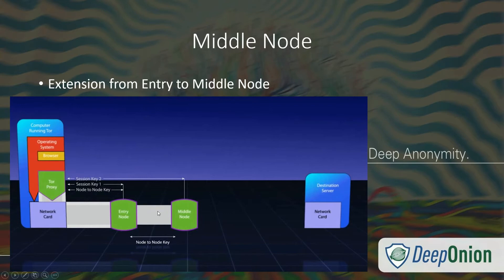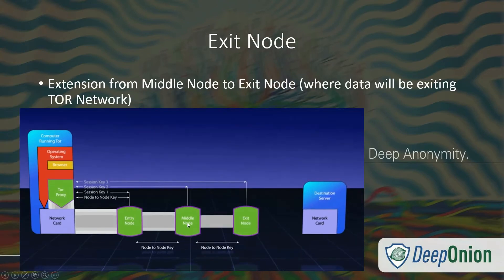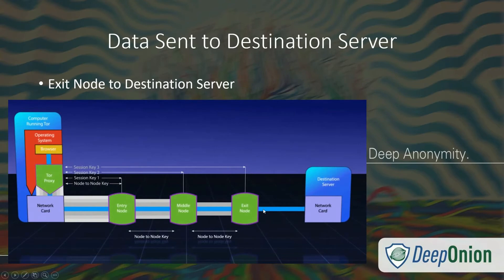The entry node then extends the network to a middle node, creating another secure connection using a new encryption key - key two - between the middle node and your computer. We'll call that session two. All data traveling between the middle node and your computer is encrypted using key two. The network continues to extend where the middle node finds an exit node, which is where your data exits the Tor secure network, generating key three and session three between your computer and the exit node. All data transporting between them is encrypted and completely secure.